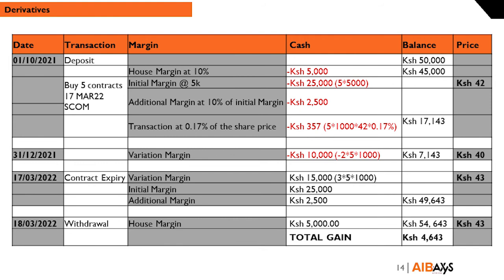So instead of the KES 210,000 she would need in the normal market, she would just need KES 30,000 to take this position — that's the power of derivatives.